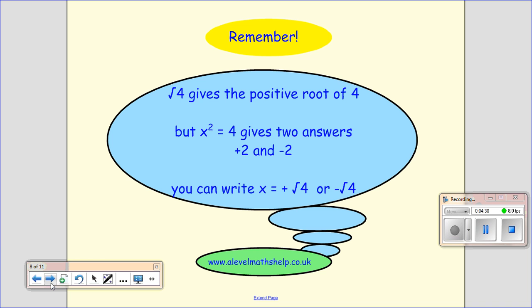Another thing to remember is that root 4 gives the positive root of 4. People get confused with this because you think of x squared equals 4, and you all know that the answer to this, x, could be either plus 2 or minus 2. But if you want to show the negative root, you need to actually put the minus in. So if it just says root 4, it's always the positive root.